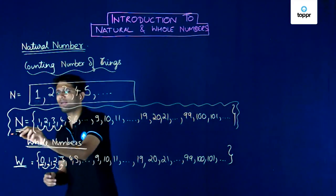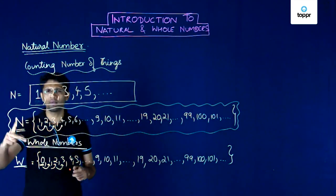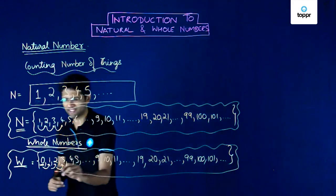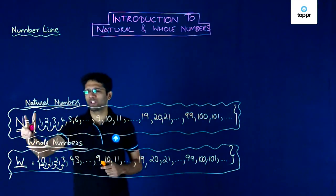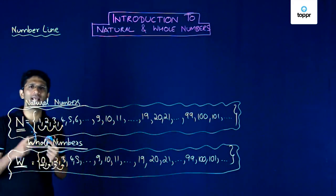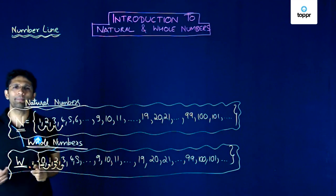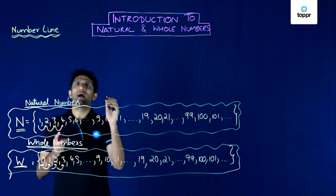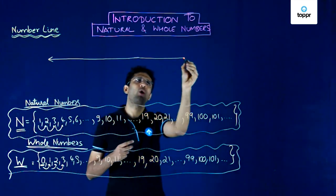Because in arithmetic operations we will often use the idea of a diagram, we will use a diagram to represent natural numbers and whole numbers. We will now extend those concepts and learn how to represent those numbers on a number line. A number line is a horizontal line that extends in both directions, and we will represent natural numbers and whole numbers on it.